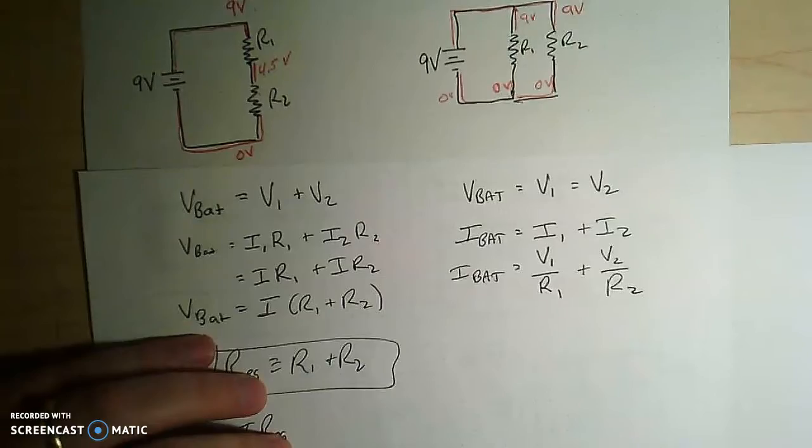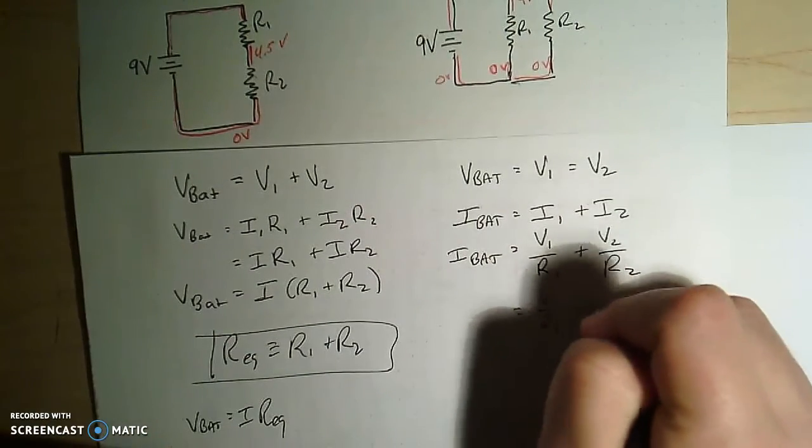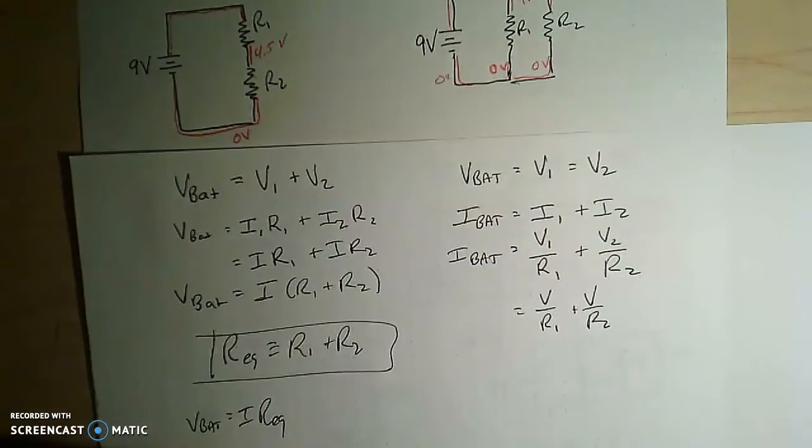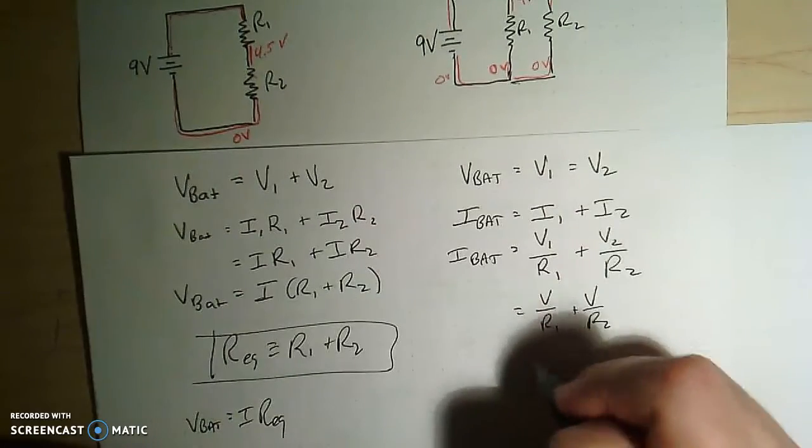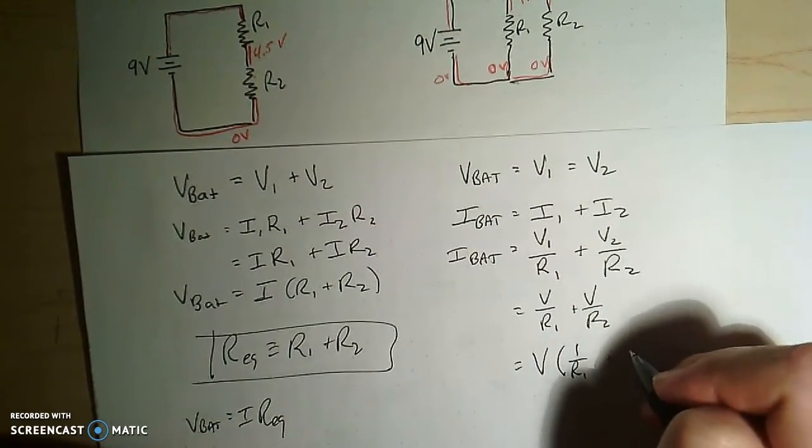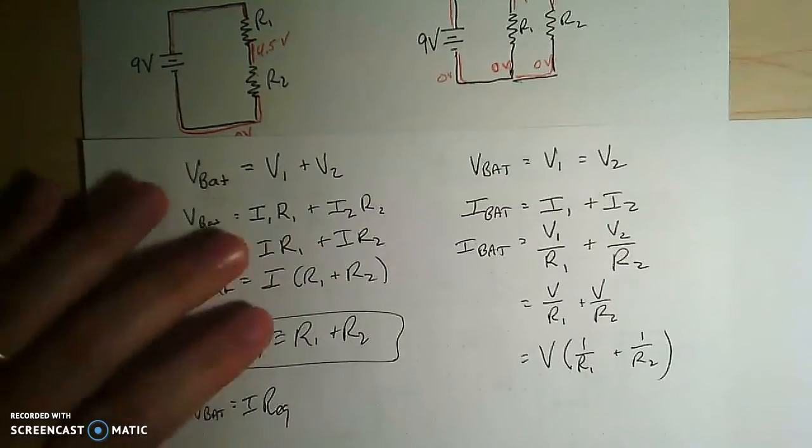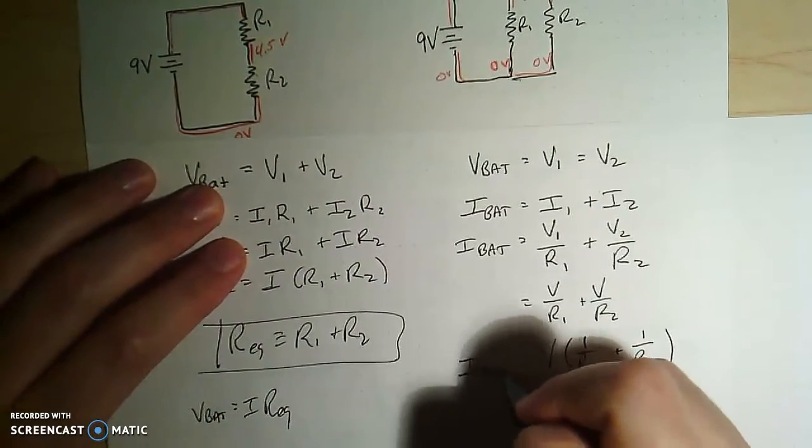But we said that these two V's are the same. So I can just write this as V over R1 plus V over R2. And if I factor out the V, it's V times 1 over R1 plus V times 1 over R2, right? Equals the current in the battery.